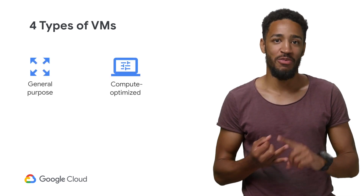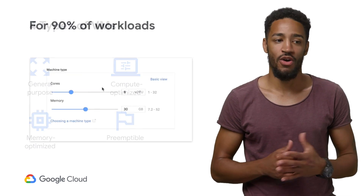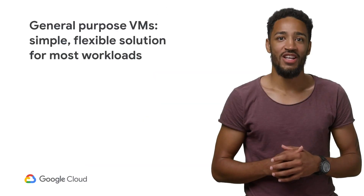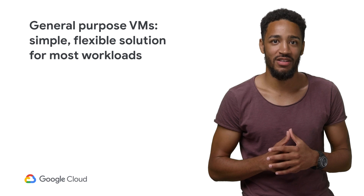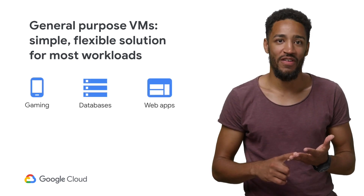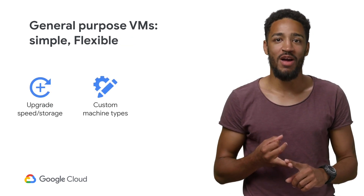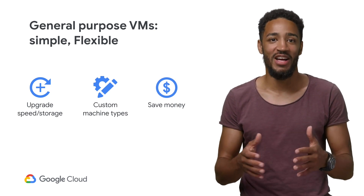We've got general purpose, compute optimized, memory optimized, and even preemptible VMs. For 90% of your workloads, you can find exactly what you need with just one click, because for most of your needs, general purpose VMs are the most flexible and simplest option. They're great for a wide range of workloads like gaming, databases, web serving, and more. They let you upgrade for more speed or storage, create custom machine types, and you even get recommendations that tell you when you can make changes, like downsizing to a smaller VM that will save you money.